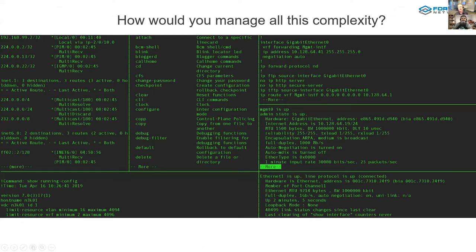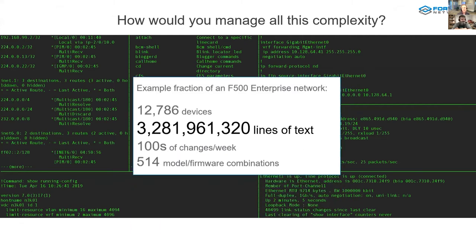Networking and network operations is extremely difficult. You need to know a great deal of detail and granular information to quickly make decisions. This information is gathered from a very large number of devices, most often through CLI, which is very inefficient and adds to the complexity. Networking teams have been burdened for decades with these issues because operations are slow and complex with very limited visibility.